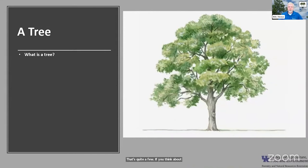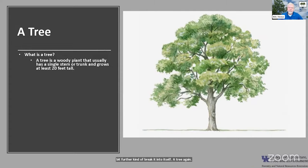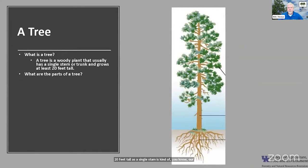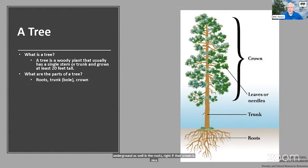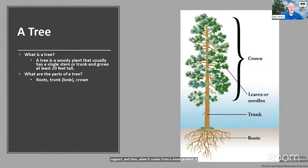Let's break down what is a tree a little further into its constituent parts. A tree is a woody plant, typically 20 feet tall with a single stem. The top part where the branches have leaves or needles is the crown of the tree. Looking at the crown gives you a good indication of what's underground in the roots as well — if the crown is healthy and robust, the roots underground are probably in good shape too. The trunk is the main stem or support, and a lot of the solid wood we use comes from that bottom 16 feet or so.